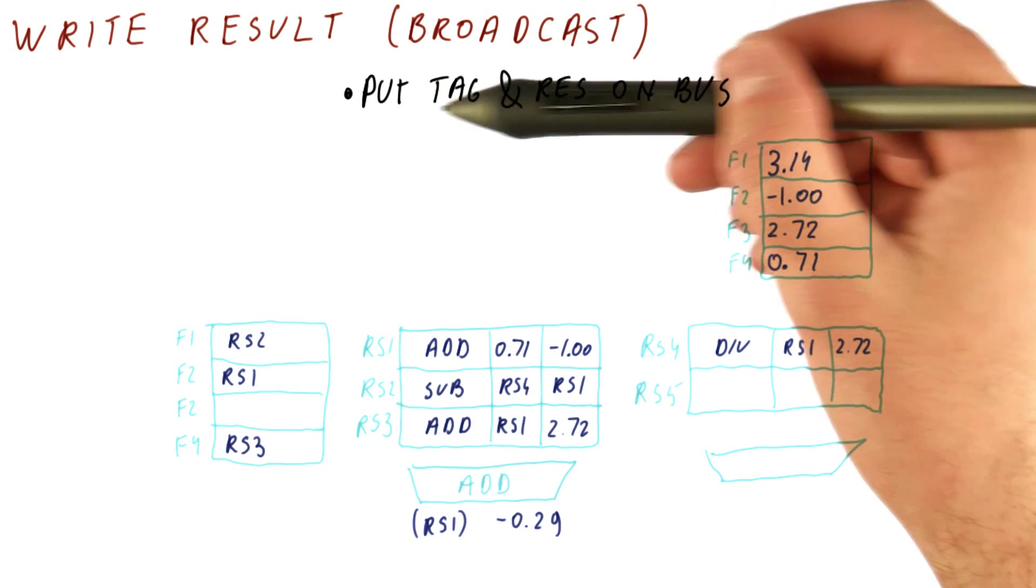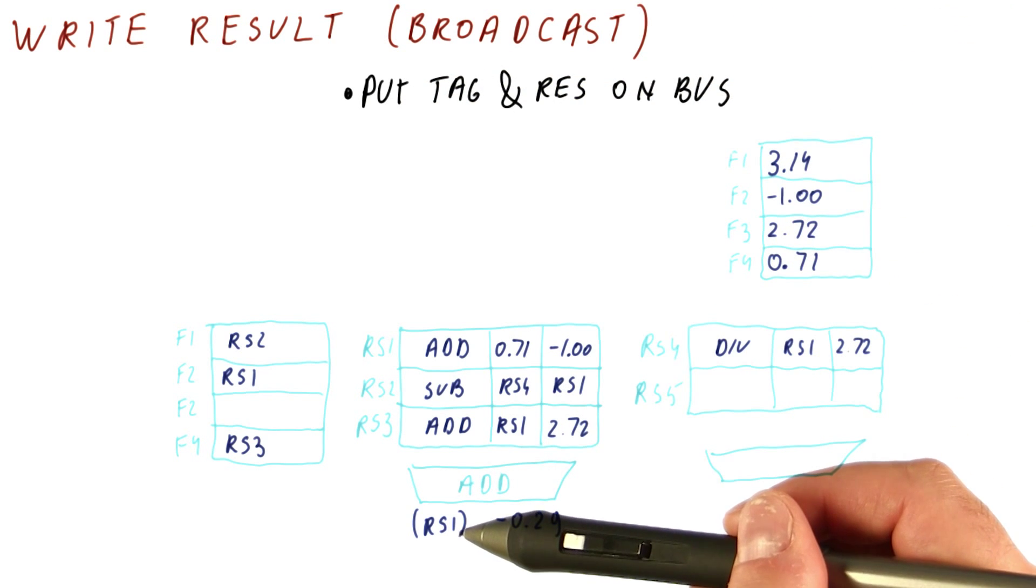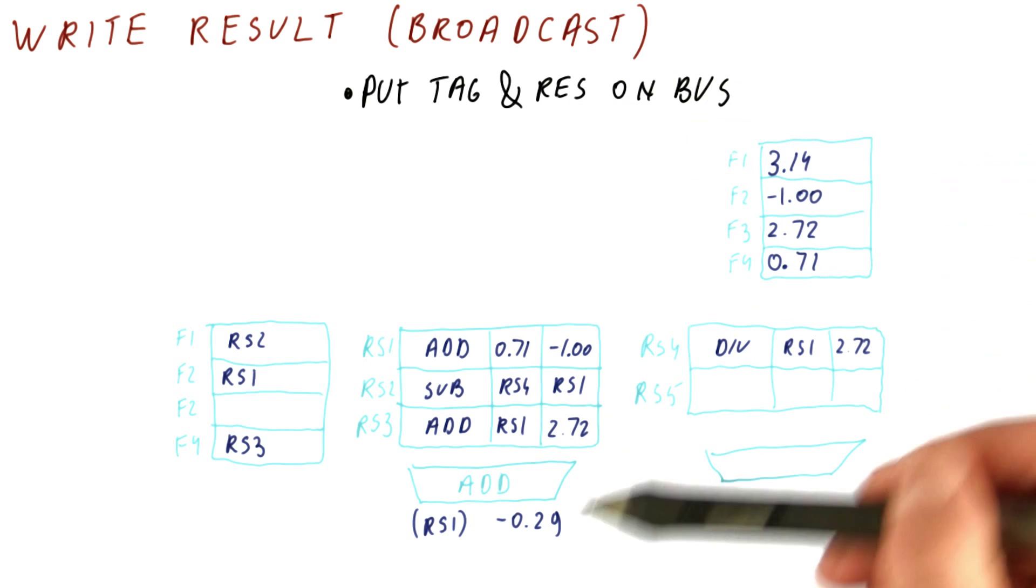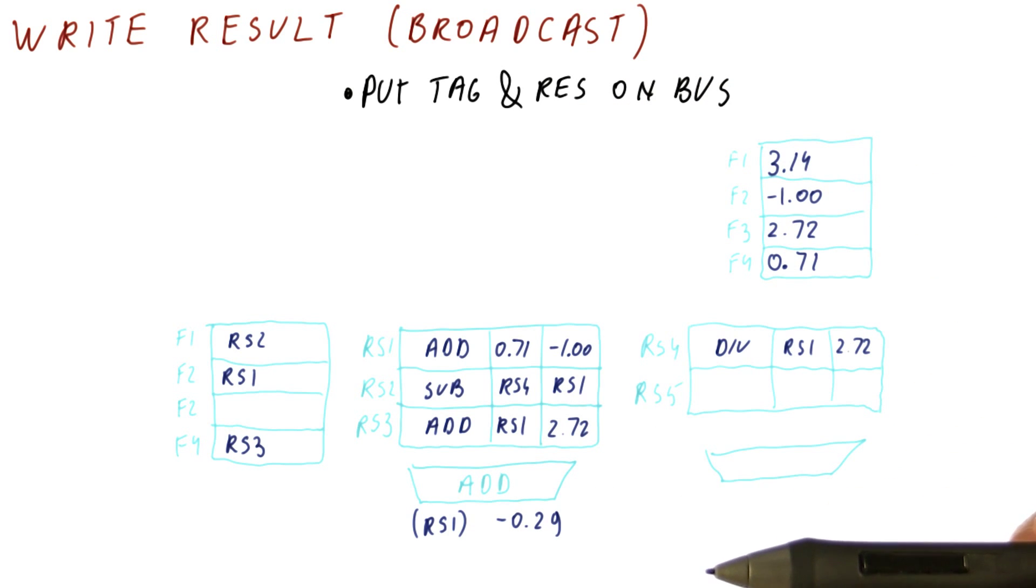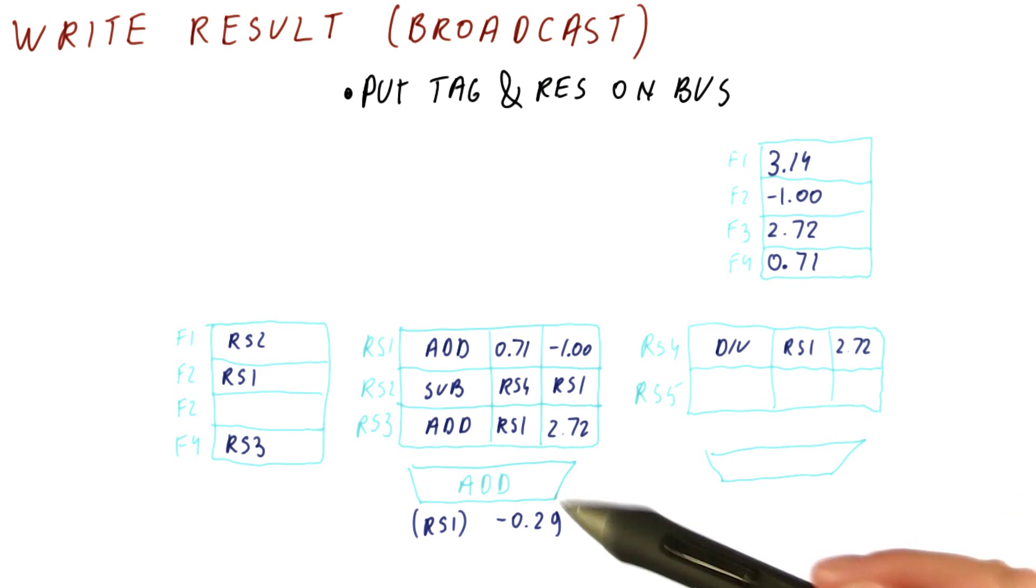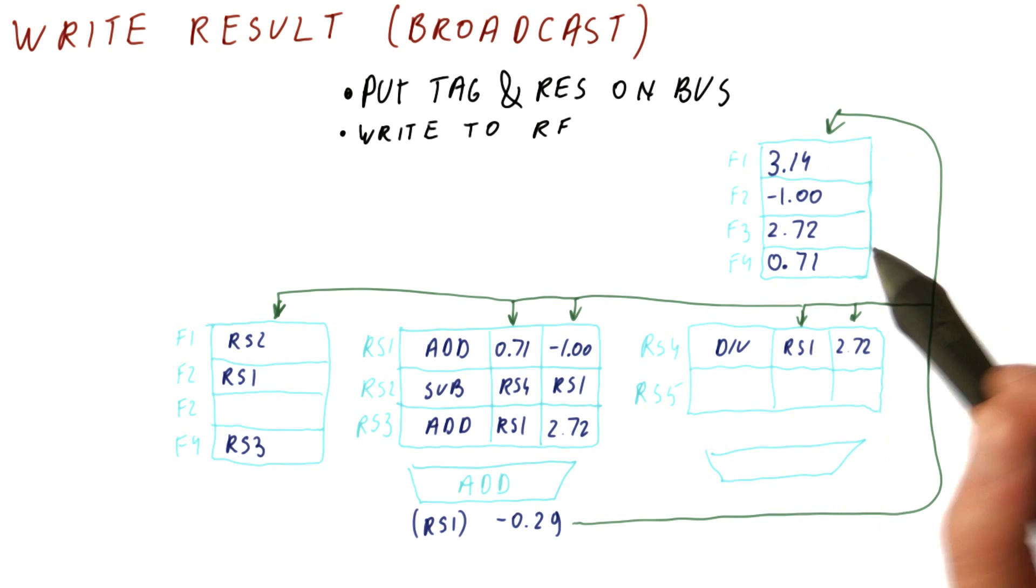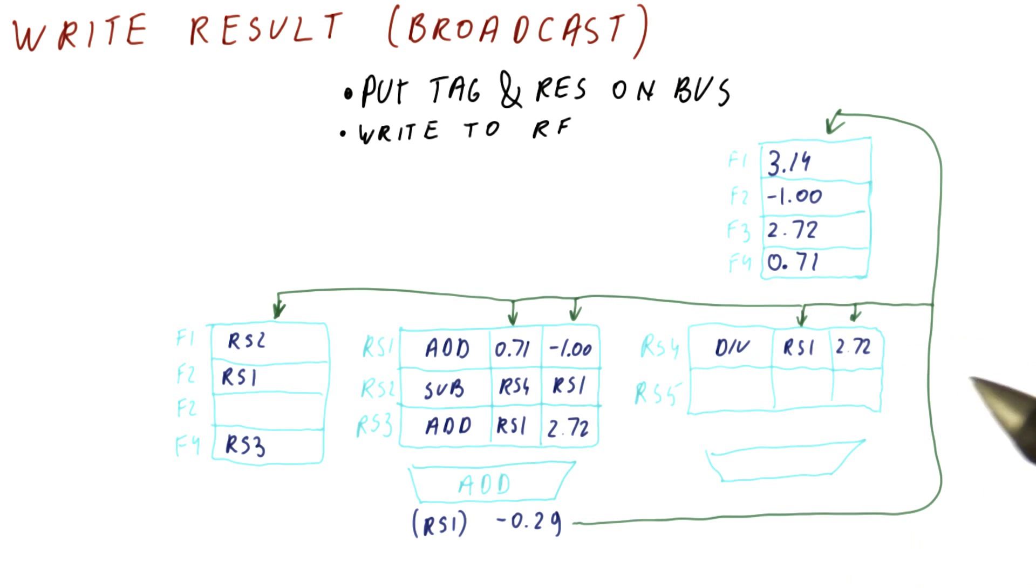The first thing that happens is we put the tag, in this case RS1, and the result, in this case -0.29, on the bus. It gets broadcast to all of these structures. As a result of the broadcast, this will reach all of these units.